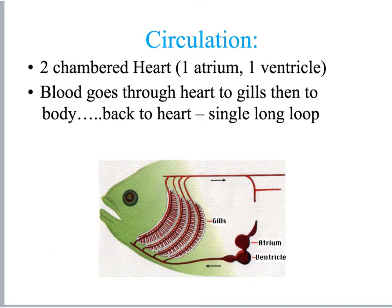The fish has a fairly simple circulatory system with a two-chamber heart. As we go up the levels of animal organisms, it varies from a two-chamber heart all the way up to our four-chamber heart, which is much more efficient. Fish only have one atrium and one ventricle, and the blood goes around in a single loop — not as efficient as even the amphibians, which have a three-chambered heart, and certainly less efficient than our four-chamber heart for separation of oxygenated and deoxygenated blood.